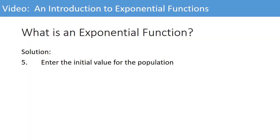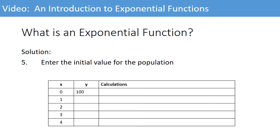The next step is to enter the initial value for the population. We know when the sample was first given, there were 100 bacteria given. This is the initial value.